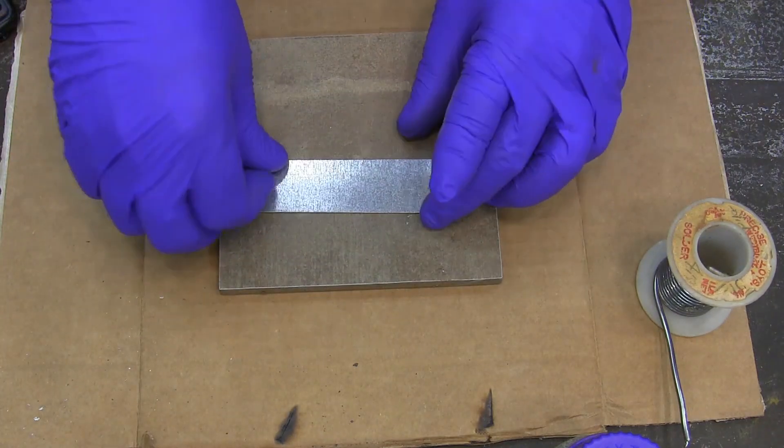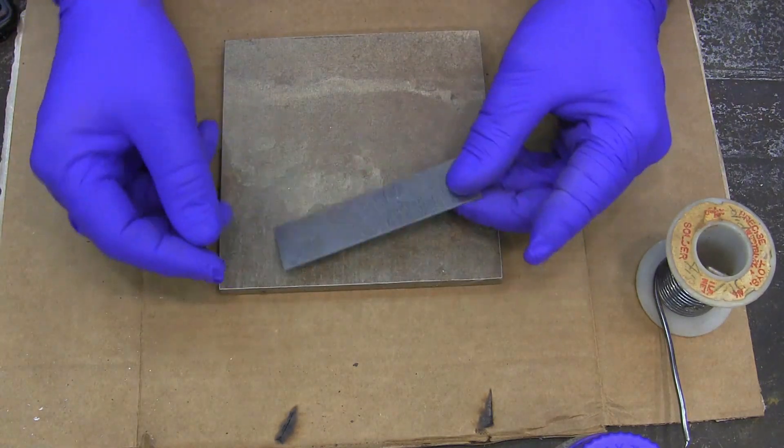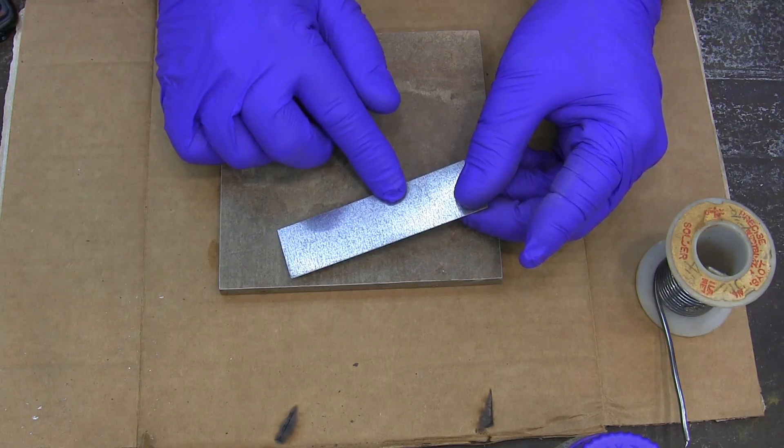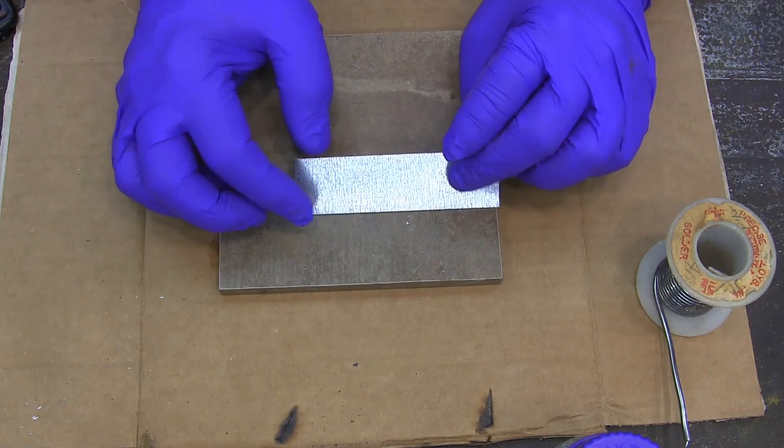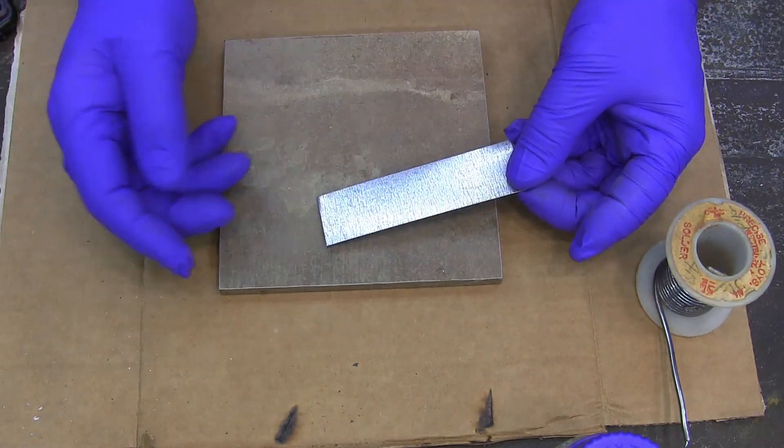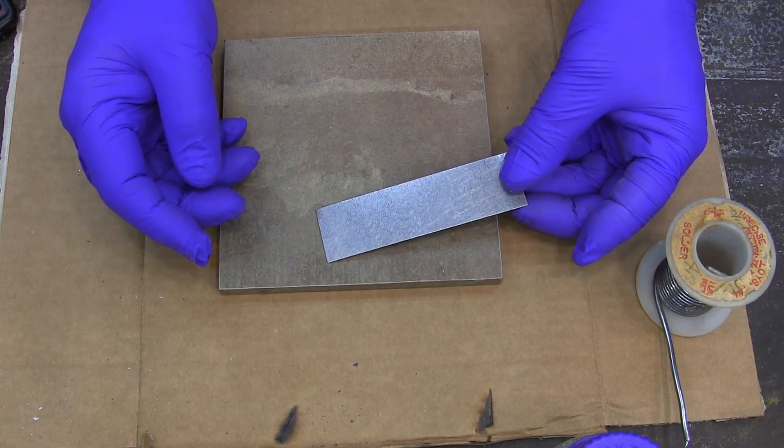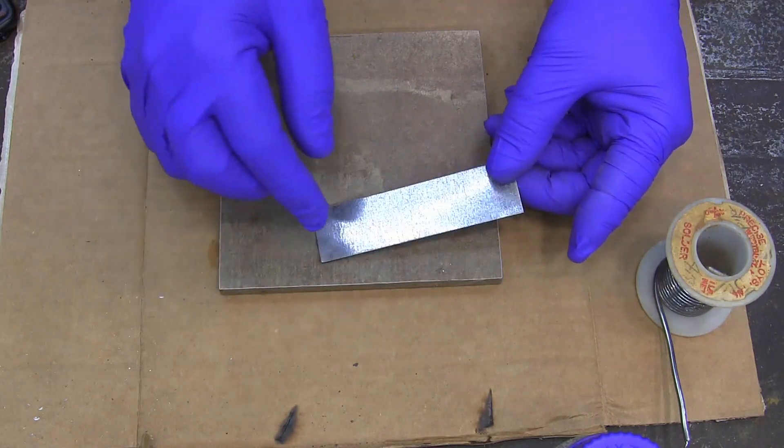All right, then your metal needs to be clean-ish. So I have not scoured this. I haven't really cleaned it. I just cut it off the sheet that it originally came on. So it might have a light film of oil. I don't really care.